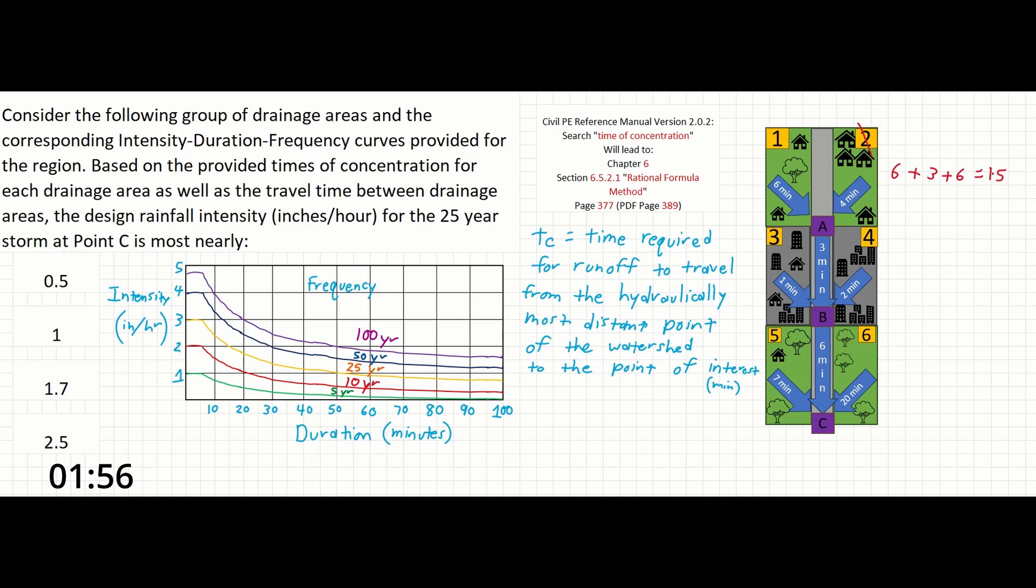Next, we can see that drainage area 4 is the longer of the two that drain to point B. So we can add 2 minutes to the 6 minutes from point B to C to get 8 minutes.